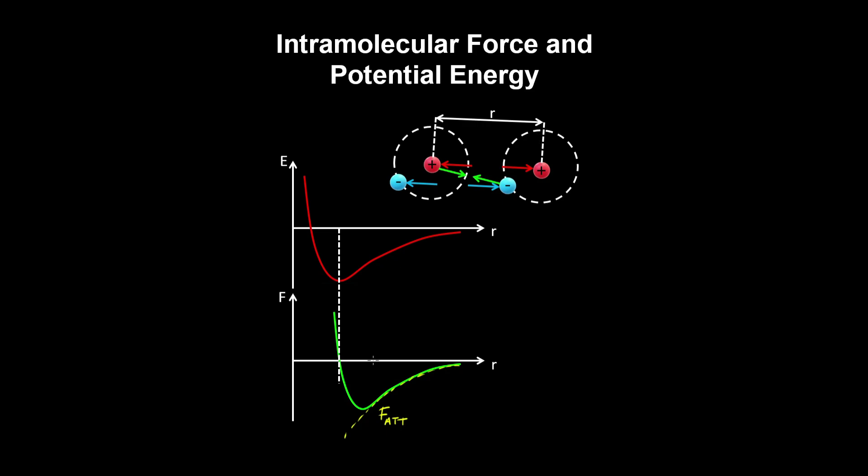And as the atoms keep getting closer and closer together, you start getting repulsion between the electrons when their orbitals overlap. And the repulsive force increases rapidly because the nuclei will also repel each other.